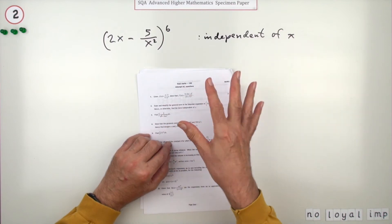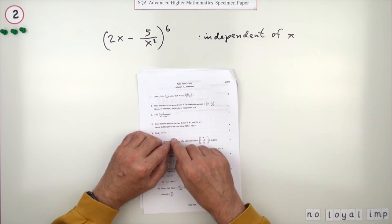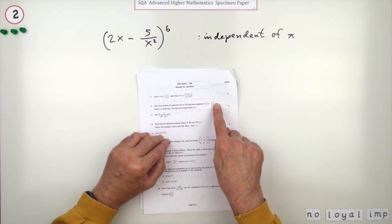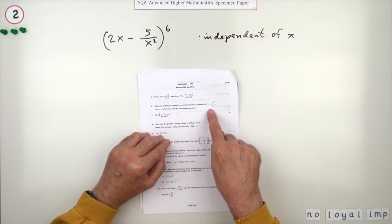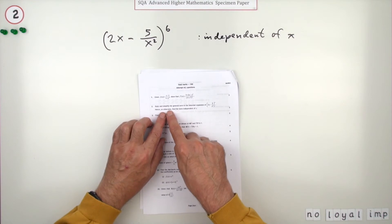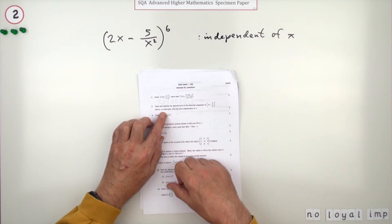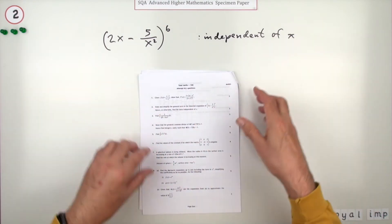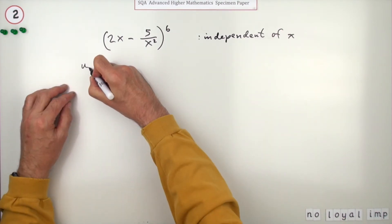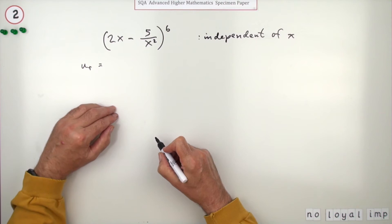Then it says hence or otherwise find the term independent of x. So what that means is there's marks for setting out the general term and then just the last mark for actually finding it. So if you found it by other means, you'd only get one mark out of three. You have to do this bit first.